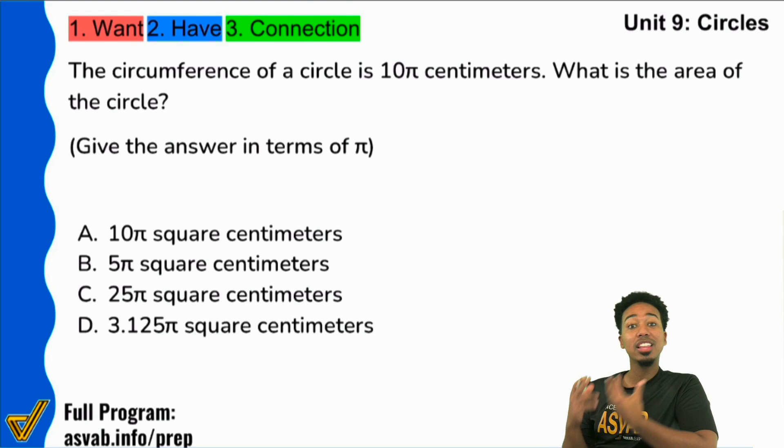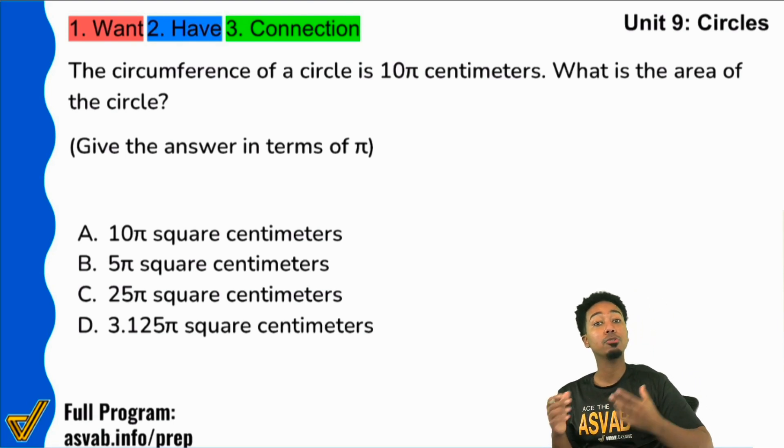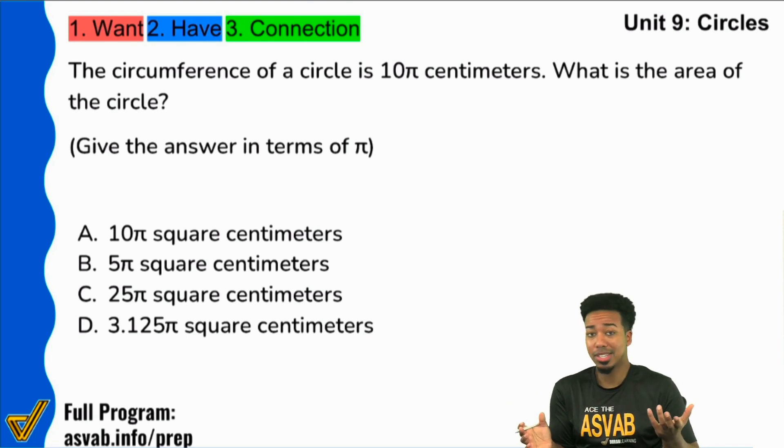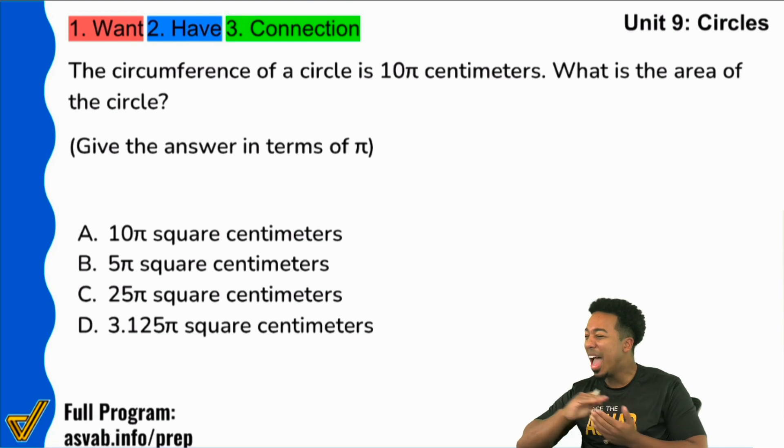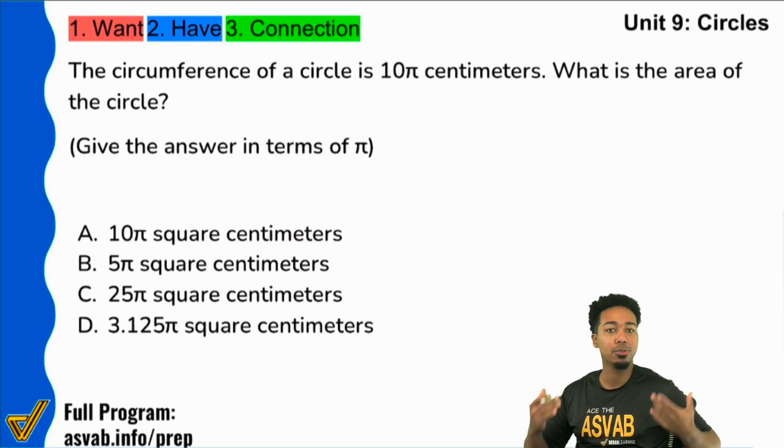This is a problem that stumps a lot of people because typically when you blend more than one idea or concept when it comes to math, a lot of people typically mess up. So if you know how to do a problem like this, then you're giving yourself a massive advantage in terms of your potential ASVAB score. So pay attention, let's have some fun.